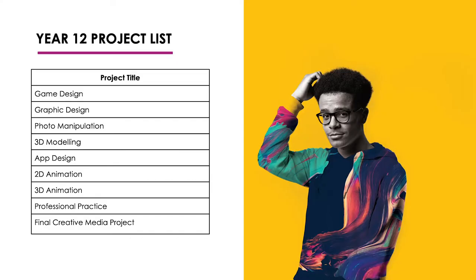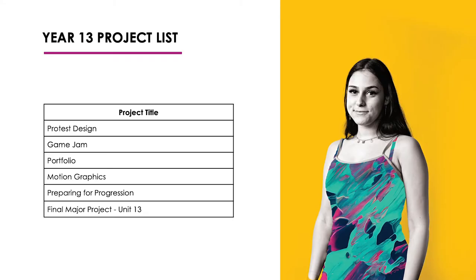The course entails 13 units split between the two years you would be here. In the first year you study graphic design, 3D modelling, photo manipulation, app design, and game design. In Year 13 we continue and develop your projects from Year 12, going on to study game jam, protest design, motion graphics, and portfolio — where you put together your work to prepare you for the next stage in your career.